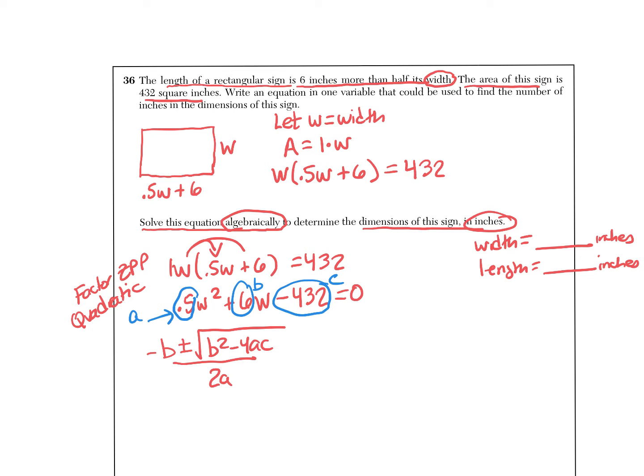I'm just going to plug it in, reminding myself that I'm actually solving for x. x equals all of this, so x is equal to negative 6 plus or minus, b squared—b is 6 so 6 squared—minus 4 times a which is 0.5 times c which is negative 432, all over 2a.